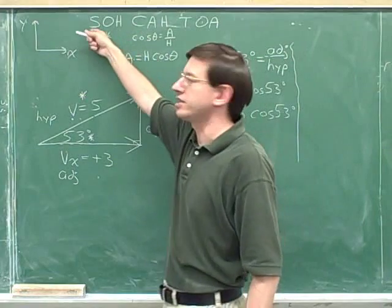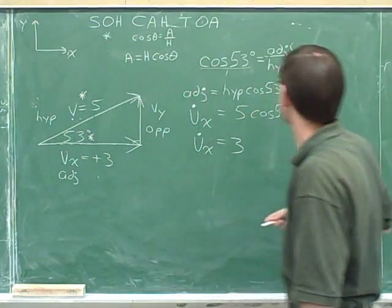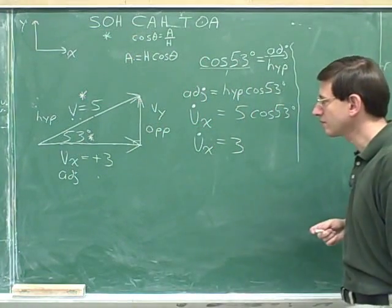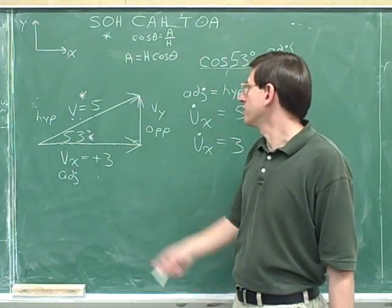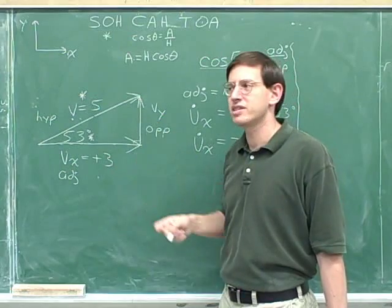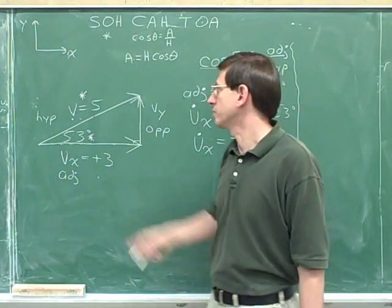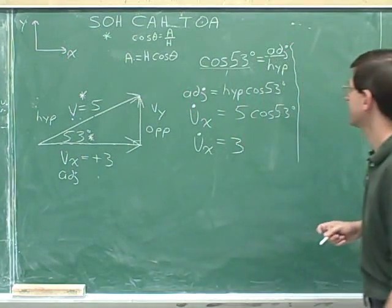Now, our plan was to use the cosine and then to use the sine. So let's go ahead and use the sine function. By the way, now that we know this number, we could use the tangent to find this number. But that's not the way it's conventionally done. Conventionally, we would use the sine instead. So let's stick with that.